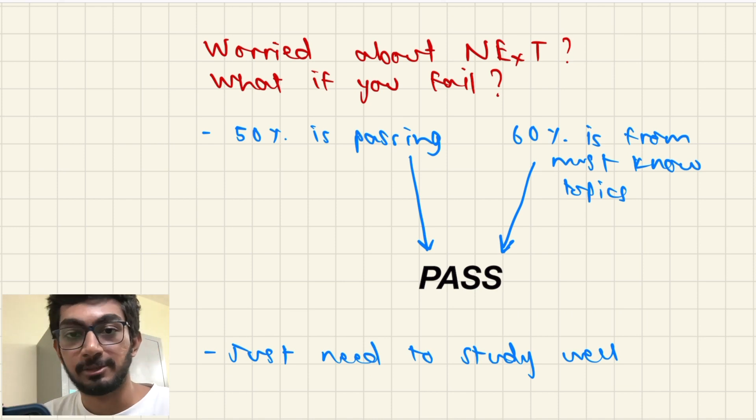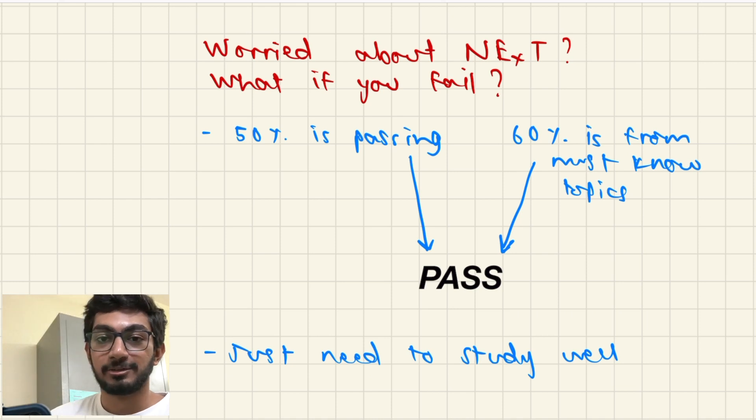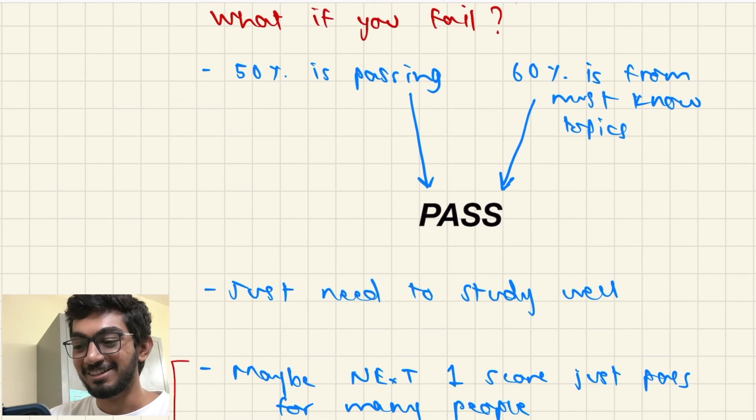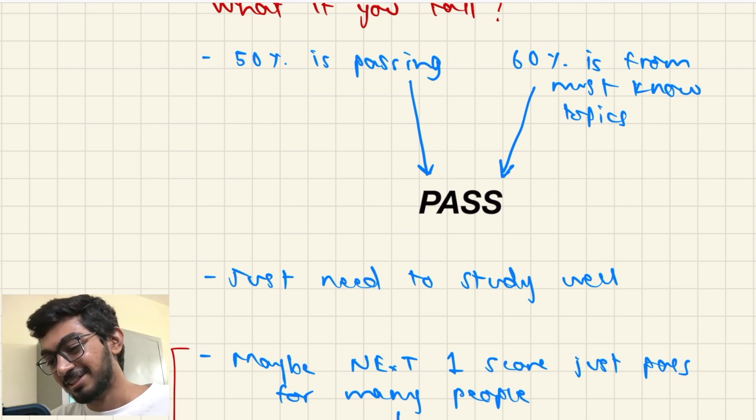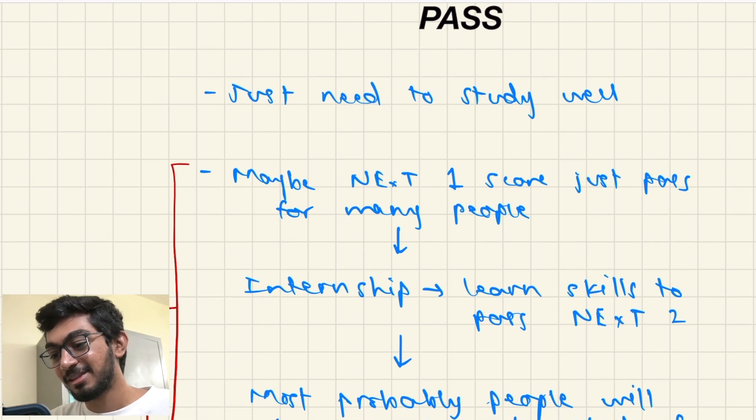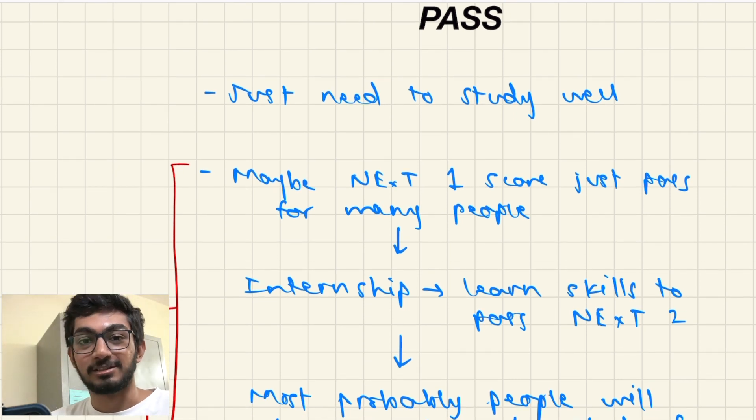I'm sure if you're someone from the final year, you're probably worried about the NEXT exam, worried about if you'll pass or if you'll fail. But to be honest there is only 50% for passing and 60% of the questions are going to be from the must-know topics, so you'll definitely pass. If you've ever seen a USMLE Step 1 score report, this is the way how they write 'pass,' so I'm just showing NMC that this is how you should write pass in case they need to copy anything more.